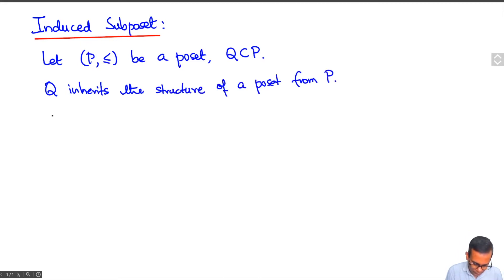How is that? Given Q1, Q2 in Q, you define Q1 less than or equal to Q2 in the poset Q, if and only if Q1 is less than or equal to Q2 in P.